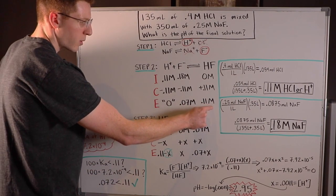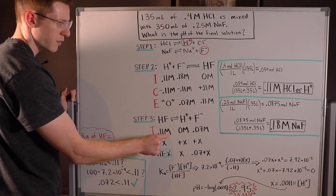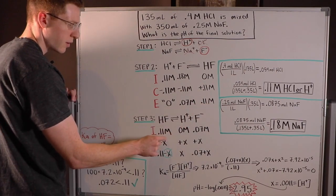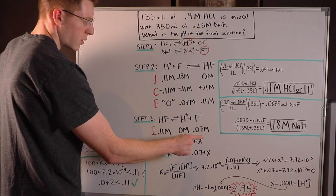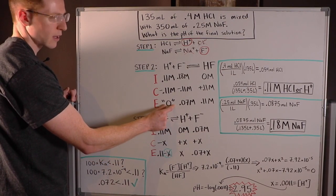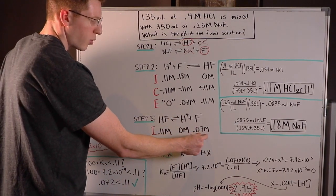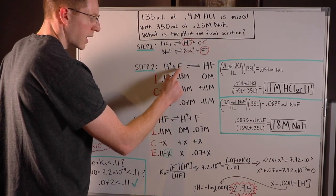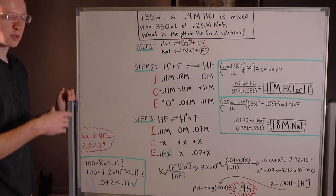And so I know I started out with 0.11 molar HF from my step two ICE table. And I'm going to assume I started out with zero molar H plus because that's what I was left with after step two and 0.07 molar F minus because that's what I was left with from step two.